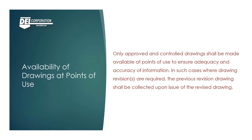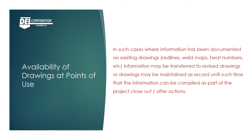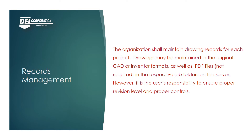Only approved and controlled drawings shall be made available at points of use to ensure adequacy and accuracy of information. In cases where drawing revisions are required, a previous revision drawing shall be collected upon issue of the revised drawing. Where information has been documented on existing drawings — for example, red lines, weld maps, heat numbers, etc. — information may be transferred to revised drawings, or drawings may be maintained as record until information can be compiled as part of the project closeout or after actions. Drawings may be maintained in the original CAD or Inventor formats, as well as PDF files, in the respective job folders on the server; however, it is the user's responsibility to ensure proper revision level and proper controls.